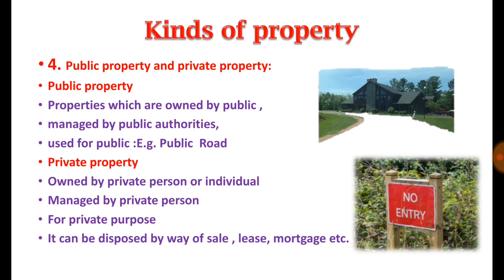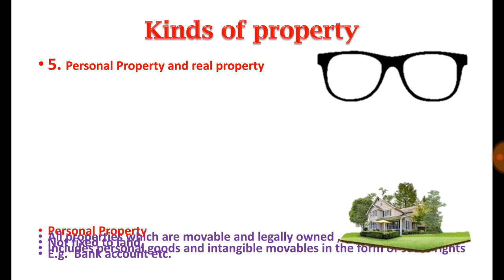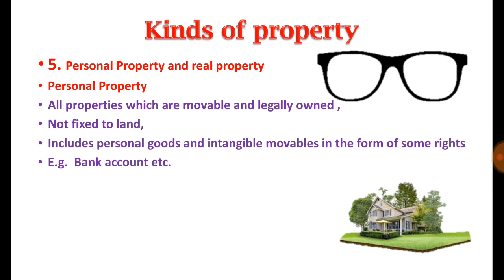Public property belongs to the public at large, while private property belongs to a particular private person or group of individuals. The last kinds of property are personal property and real property. Personal property means all those properties legally owned by an individual for personal use, generally in the form of movable goods not attached to earth. It also includes intangible movables such as bank accounts and emails.